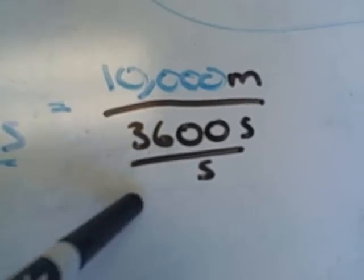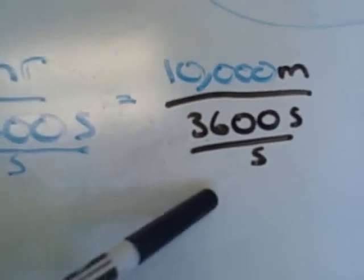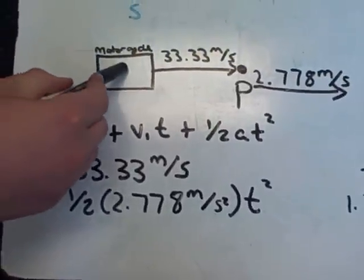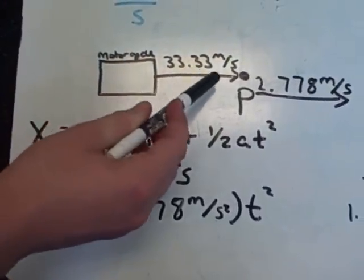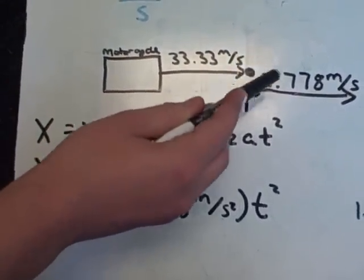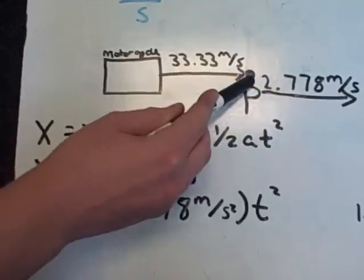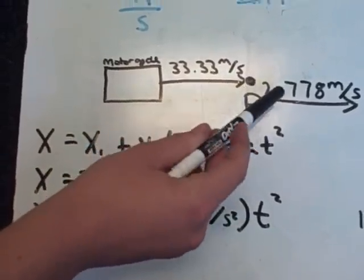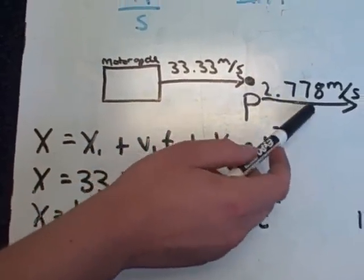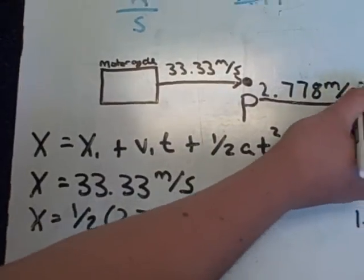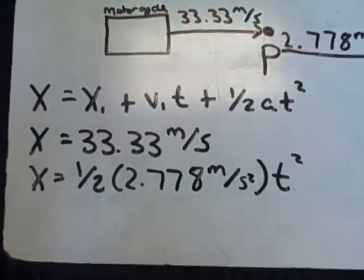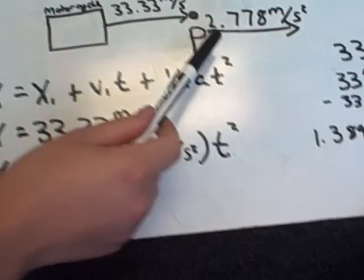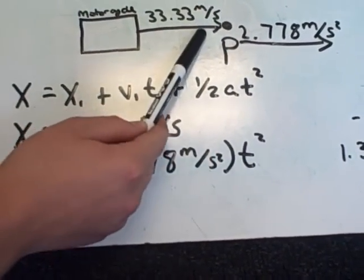In order to see what's going on here, I have a picture. The motorcycle has a velocity of 33.33 meters per second. Right when it reaches the police officer, the police officer begins to accelerate at a rate of 2.778 meters per second squared. What you're trying to find is how long it will take for the police officer to reach the speeder.